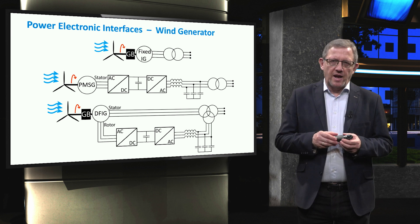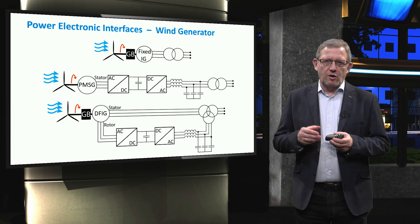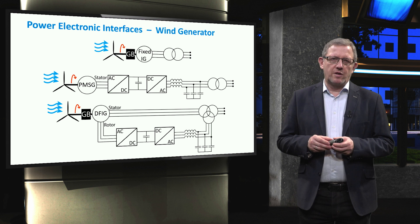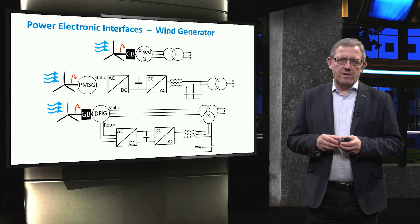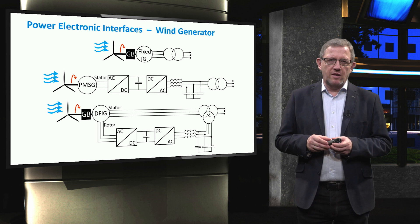On the other hand, the stator of the doubly-fed induction generator wind turbine is directly connected to the electrical grid, while the rotor is connected through a power converter. The size of the power converter is about one-third of the rated power. Unlike a full-scale permanent magnet synchronous generator, the doubly-fed induction generator still needs a gearbox.